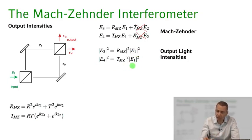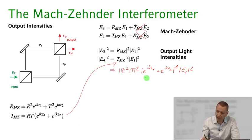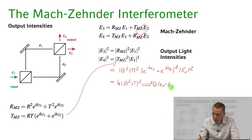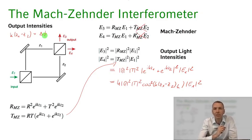Likewise for port E4: plugging in the complex transmission coefficient of the Mach-Zehnder interferometer gives norm r² times norm t² times |e^(ikZ1) + e^(ikZ2)|² times |E1|². Multiplying this out gives 4·|r|²·|t|²·cos²(k(Z1 - Z2)/2)·|E1|². Here k(Z1 - Z2) is the phase difference picked up along the two propagation paths. If the two paths are equal in length, we have zero phase difference; if they are pi out of phase, we expect destructive interference.